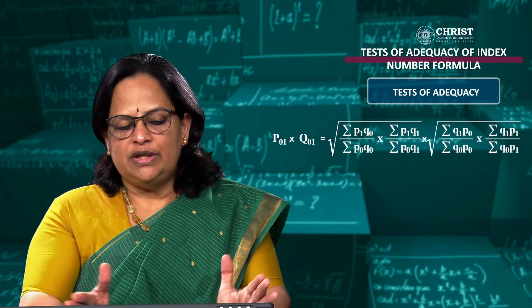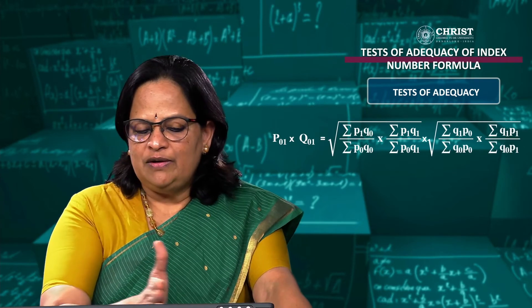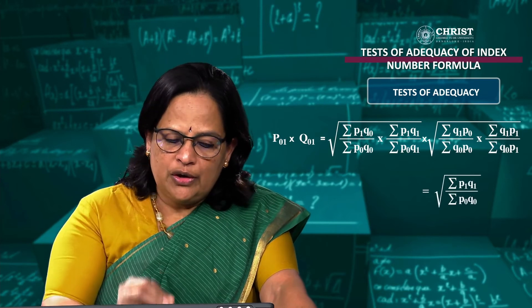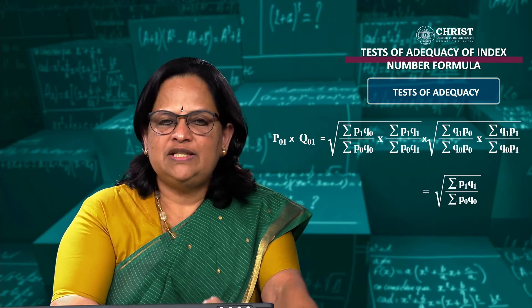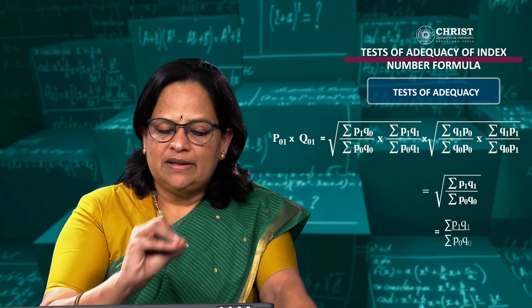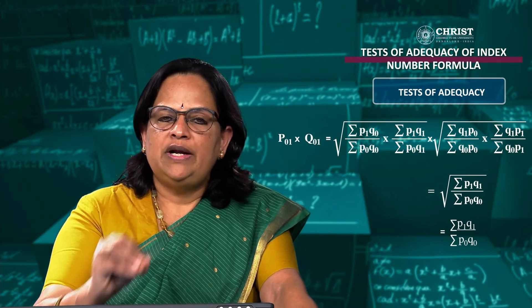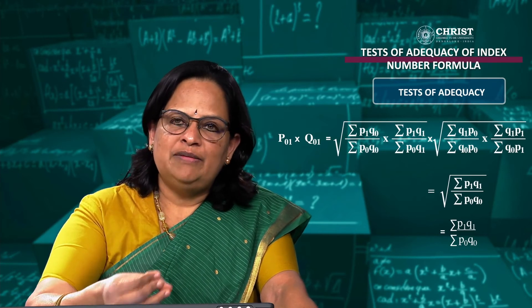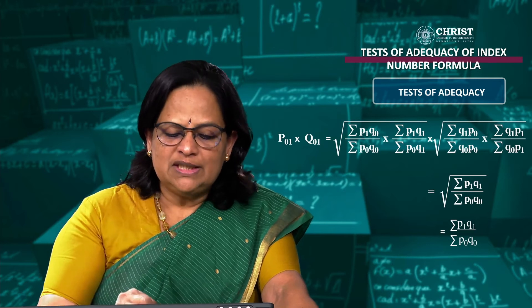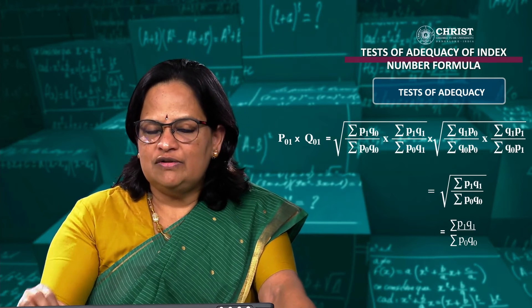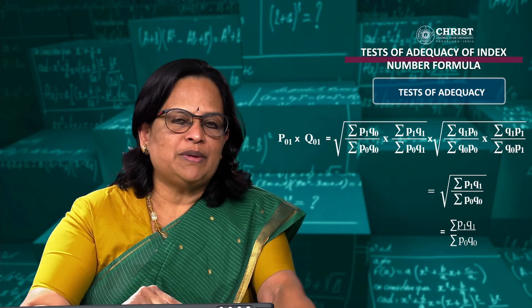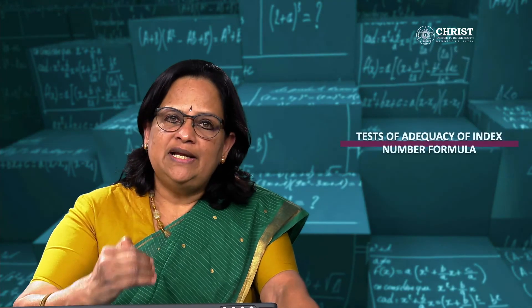We now substitute both equations into P01 × Q01. When we multiply and simplify, the common values cancel, and we get the square root of (σP1Q1 / σP0Q0), which equals σP1Q1 / σP0Q0 — that is, the current year price times current year quantity divided by base year price times base year quantity. Thus Fisher's ideal index satisfies the factor reversal test. This is also the value index.